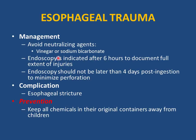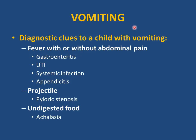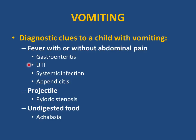Clinical approach to a child presenting with vomiting: if the child has fever with or without abdominal pain, consider gastroenteritis (which may initially present with vomiting before diarrhea), UTI (which can present with vomiting alone without urinary symptoms — always test the urine), and systemic infection. Ask about history of UTIs, constipation, family history of UTI or renal disease.